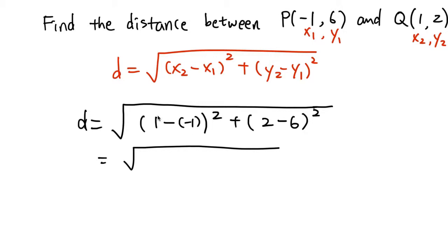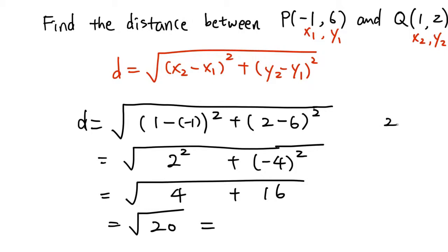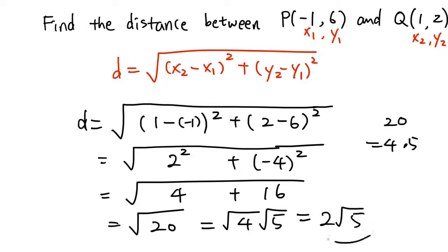Let's do the computation. 1 minus negative 1 is 2, so we have 2 squared. And 2 minus 6 is negative 4, so we have (negative 4) squared. This gives the square root of 2 squared plus (negative 4) squared, which is the square root of 4 plus 16 — since (negative 4) squared is positive 16 — equals the square root of 20. We can simplify: 20 is 4 times 5, and 4 is a perfect square, so the square root of 20 equals the square root of 4 times the square root of 5, which equals 2 root 5.